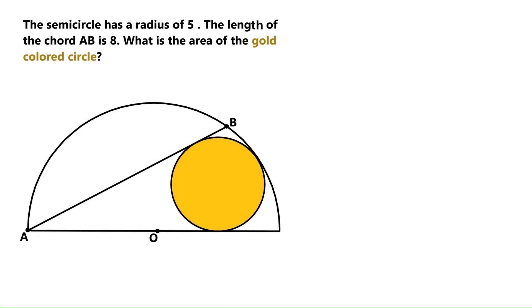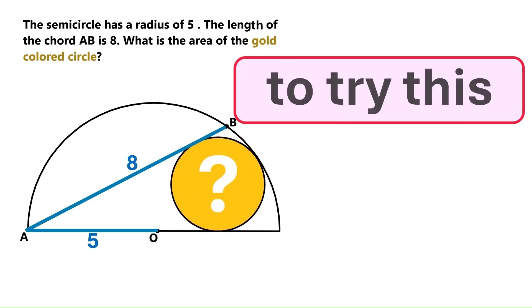In this super exciting geometry problem, we've got this big semicircle with a radius of 5, and there's this chord inside the semicircle with a length of 8. We need to find the area of this gold colored circle located underneath the chord. If you want to try this on your own, now is the time to pause the video because I'm starting to solve it right now.